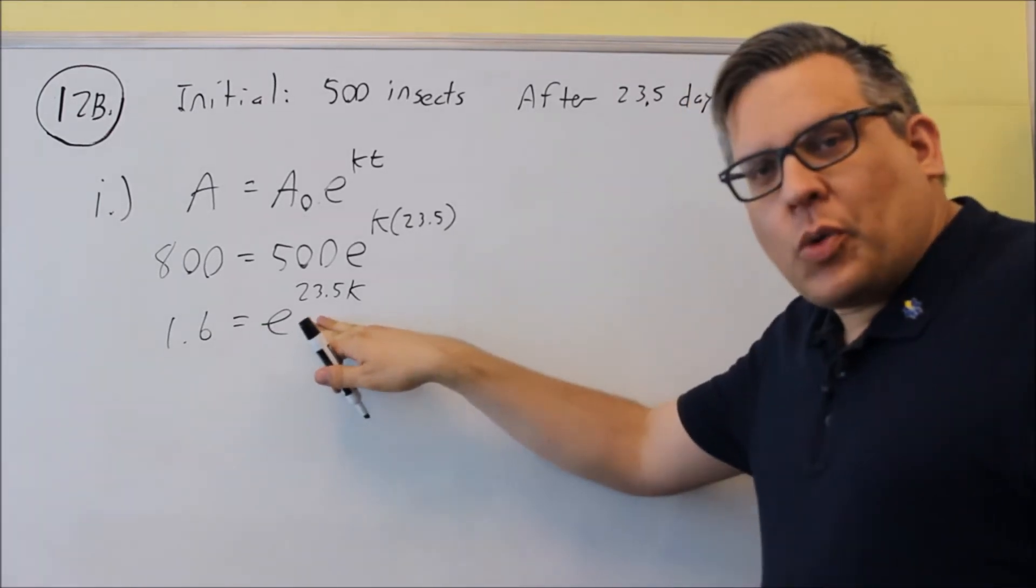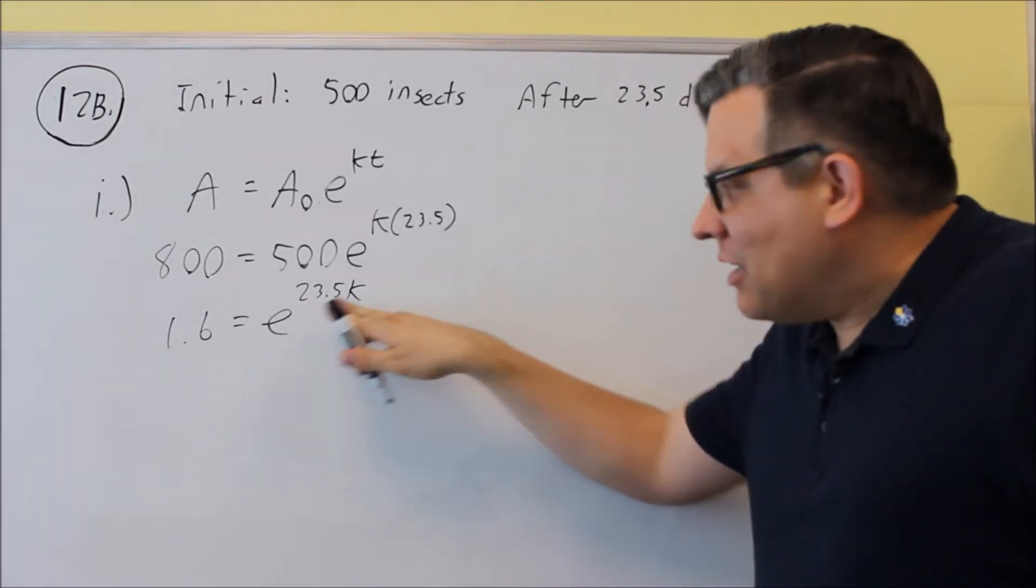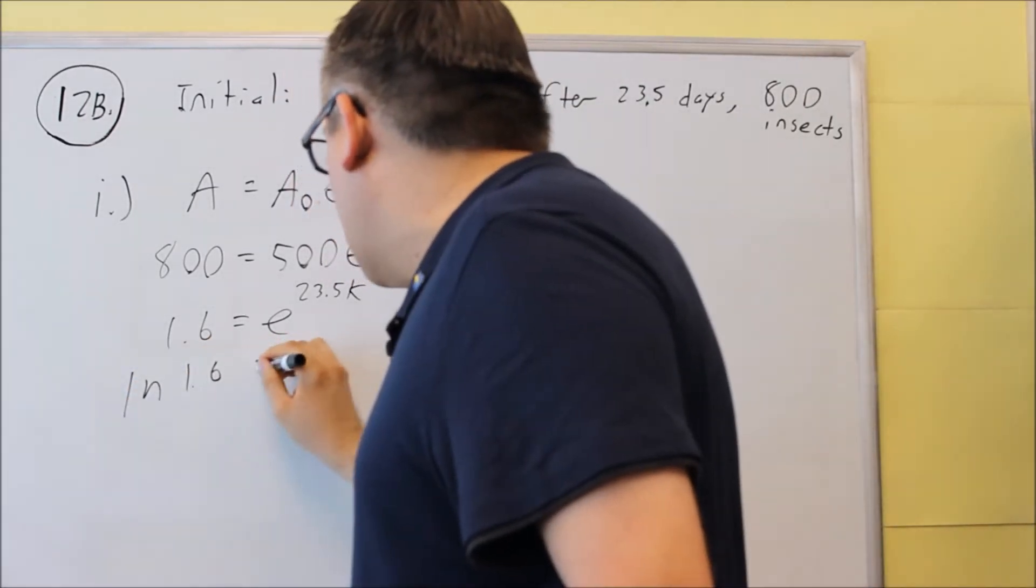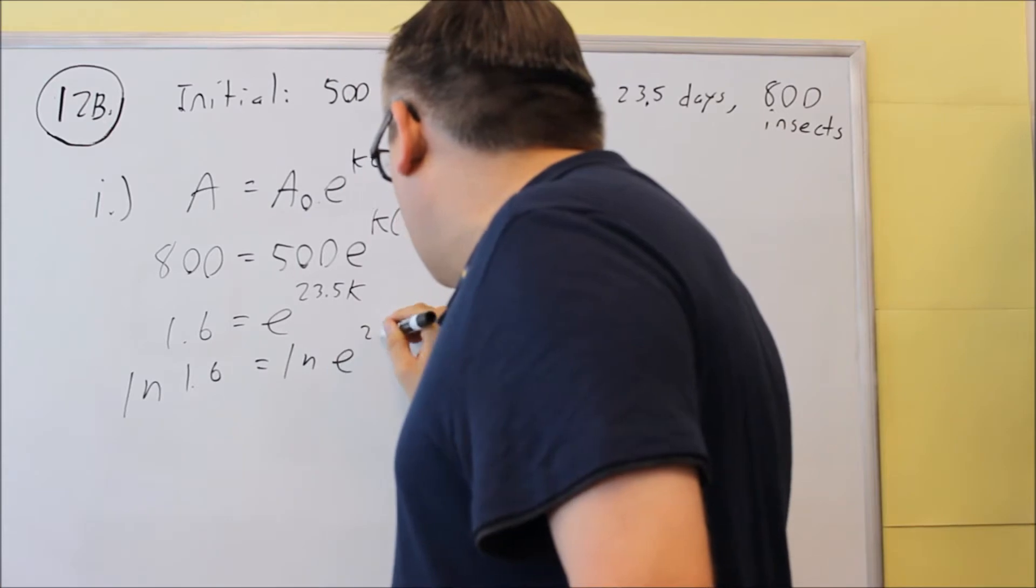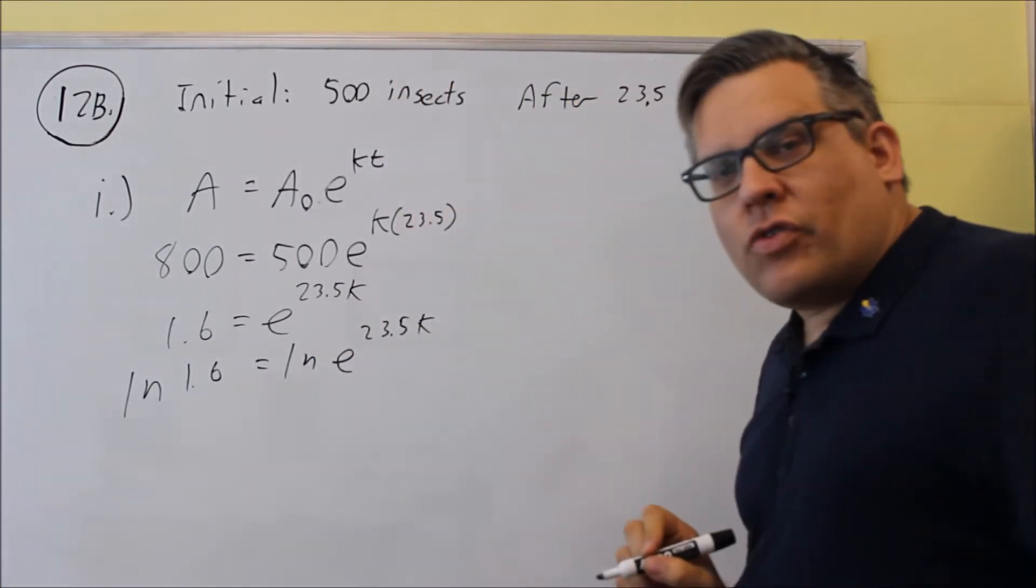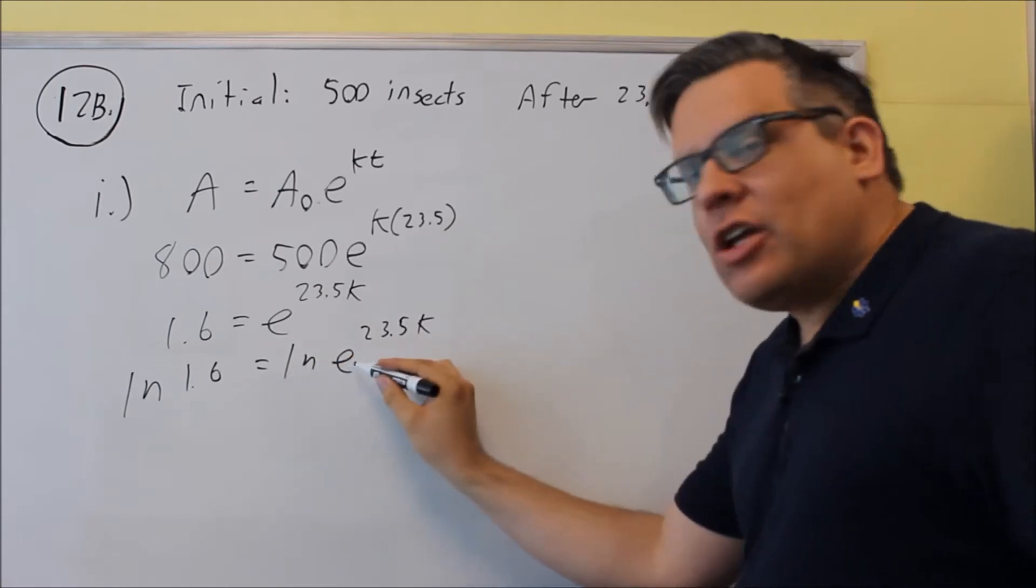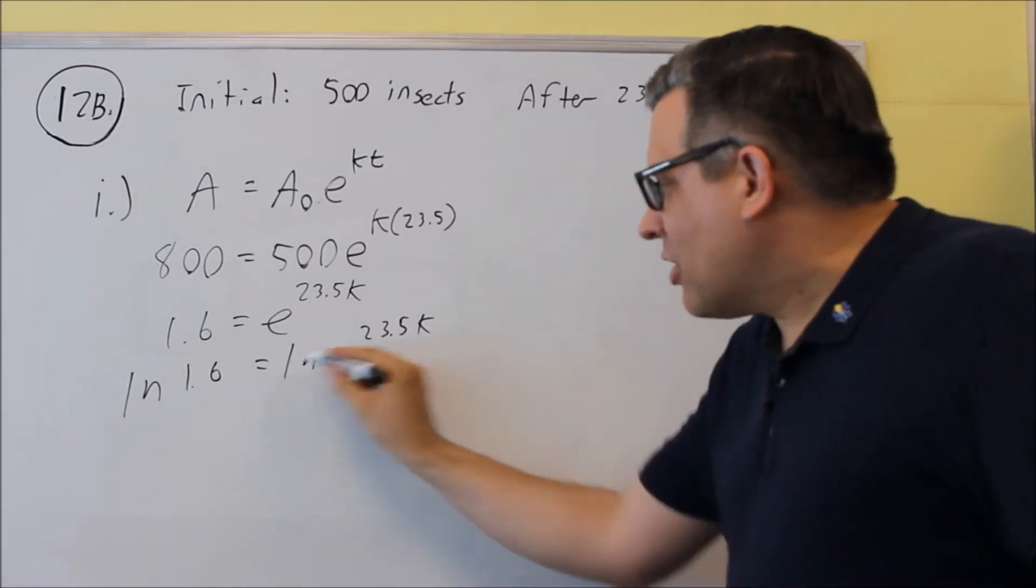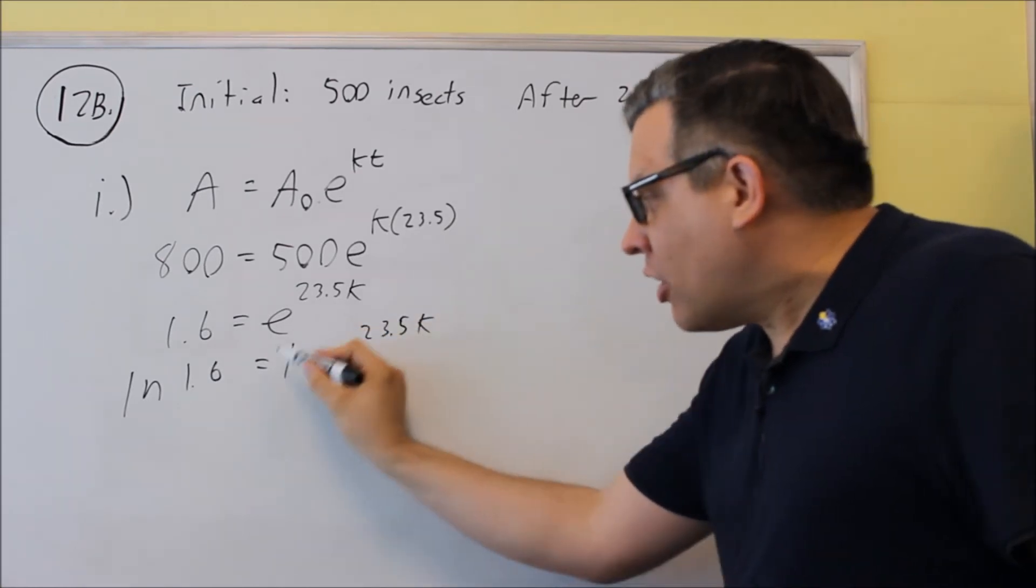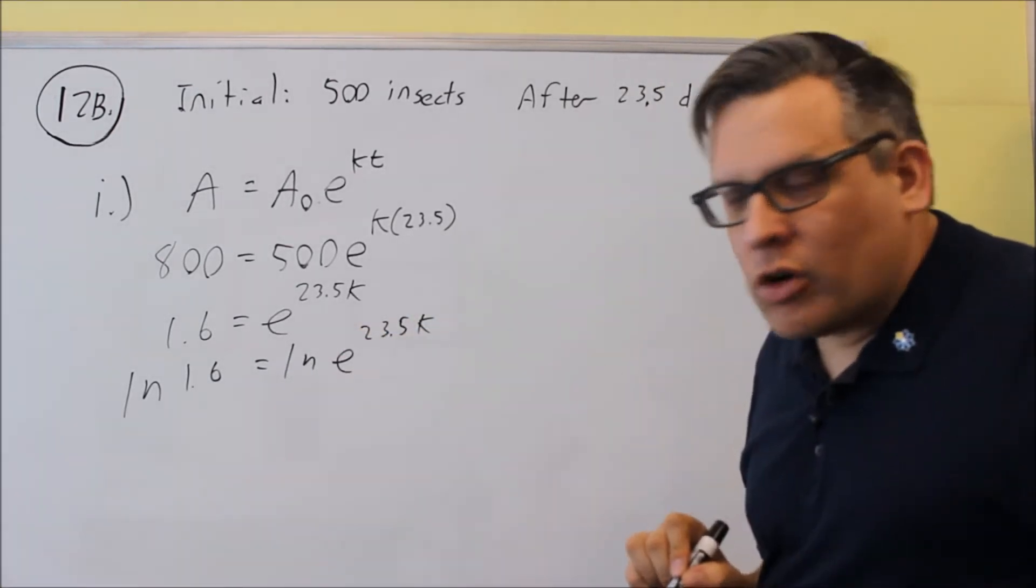Then, like before, we want to clear out the E and get K by itself, so we have to take the natural log of both sides, and that's going to allow us to remove the E because ln and E are going to cancel each other out. Technically, ln and E is equal to 1, and because our exponent property says we can bring all that down in front, that's actually why that works.